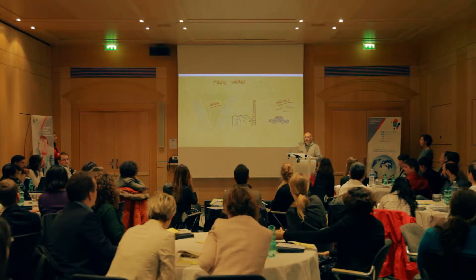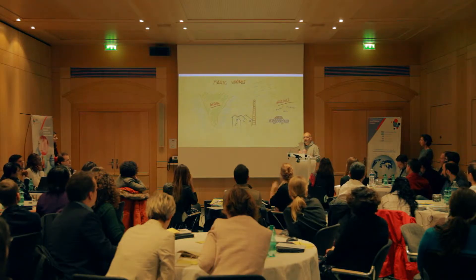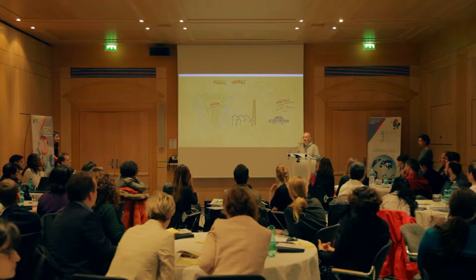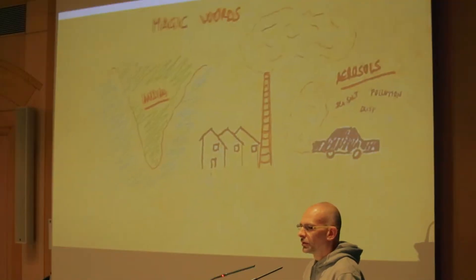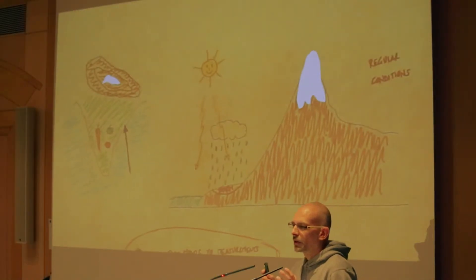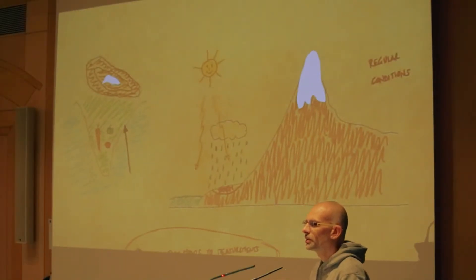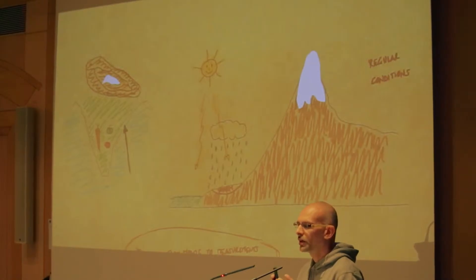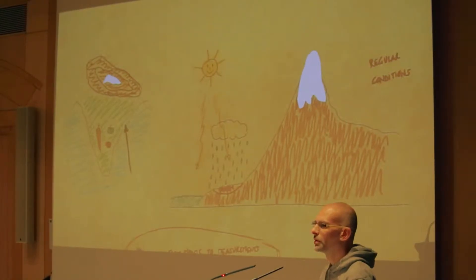Why India? India is important because it is a very nice test case. Due to recent industrialization and population growth, it is a highly polluted area. The second reason is that due to monsoon seasonality, there are really clear and defined precipitation patterns. The Indian economy is based mainly on agriculture, and agriculture relies on water resources availability.